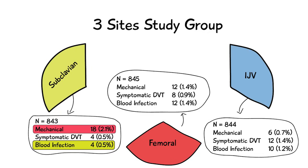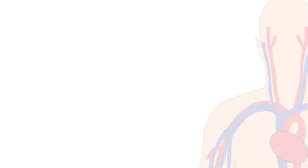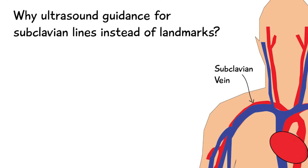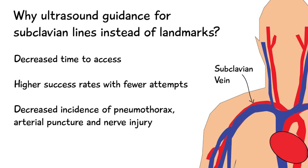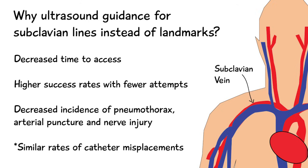However, there was an overall increase in mechanical complications including cannulation of the subclavian artery, pneumothorax, and chylothorax in this group. Notably, the use of ultrasound guidance was optional in this cohort. Several mostly observational studies have suggested that the use of ultrasound guidance for placement of subclavian lines is associated with decreased time to vessel access, higher success rates with fewer attempts, and decreased incidence of pneumothorax, arterial puncture, and nerve injury. There are also similar rates of catheter misplacements.